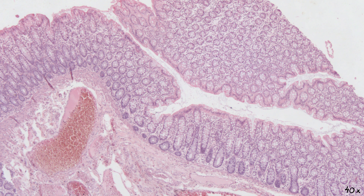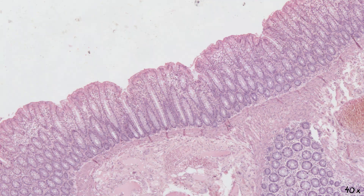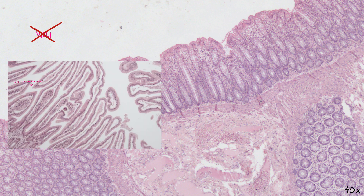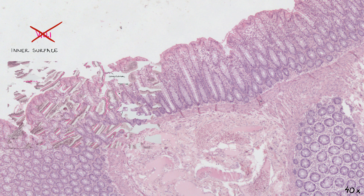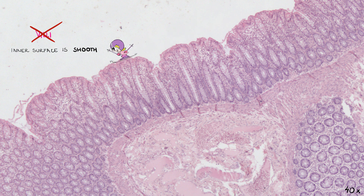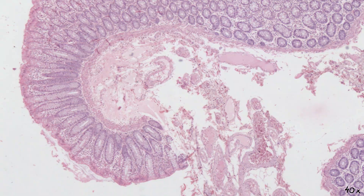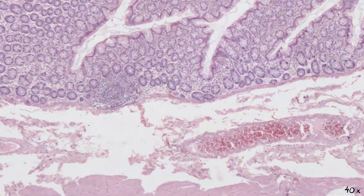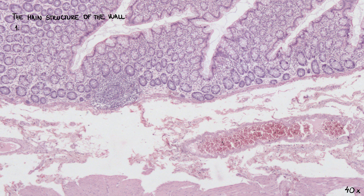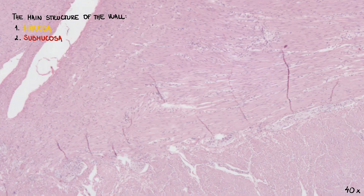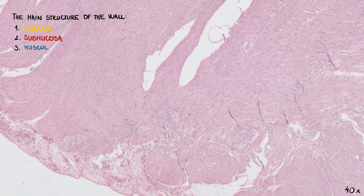The second important difference from the small intestine is the absence of villi. Thus, the inner surface of the large intestine is smooth. The main structure of the wall consists of mucosa, submucosa, muscularis, and serosa.